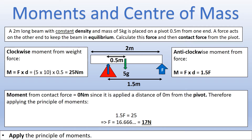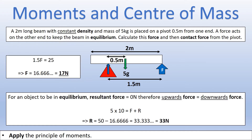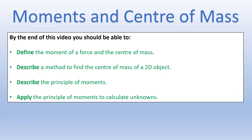Now let's find the contact force. When the object is in equilibrium, the resultant force is zero, meaning upward forces equal downward forces. The downward force is 50 newtons from the weight. The upward forces are F and the contact force R. Since F is 16⅔ newtons, the contact force is 50 − 16⅔ = 33 newtons. That finishes this video — we've seen how to apply the principle of moments and how knowledge of center of mass is needed to solve these problems. If you have any questions, please feel free to comment. Thank you for watching.